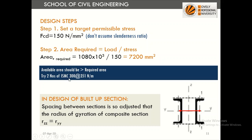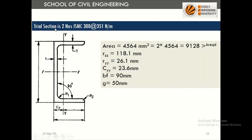ISMC 300 is Indian Standard Medium Channel with overall depth 300 mm at 351 N/m weight. For a built-up section, we adjust the spacing between the centroids of the sections so that the radius of gyration of the composite section is approximately equal about both axes. For ISMC 300: available area is 9128 mm², Rzz is 118 mm, Ryy is 26 mm, and Cyy is the distance from the back of the channel to the centroid.